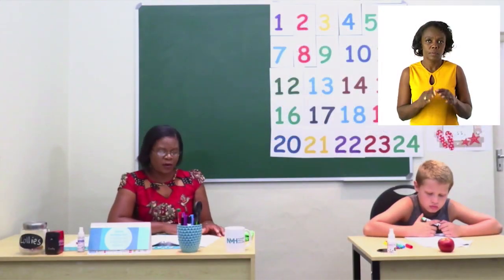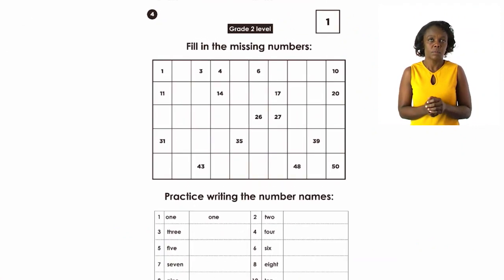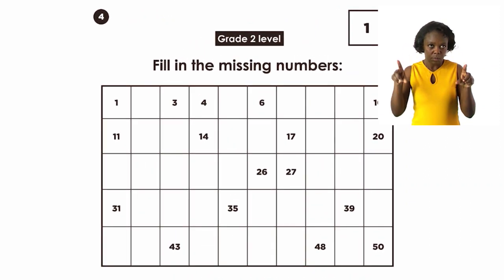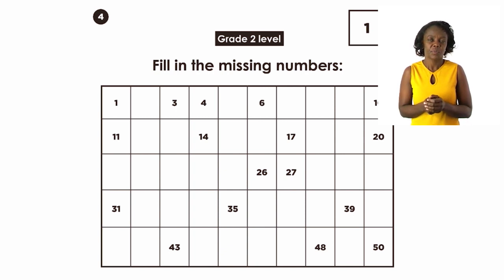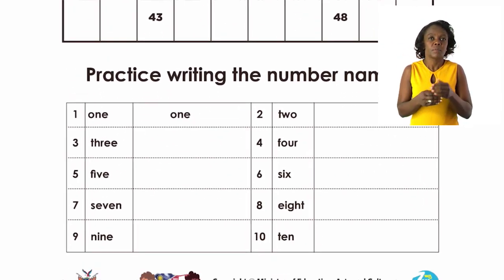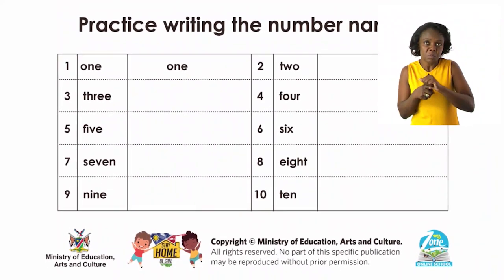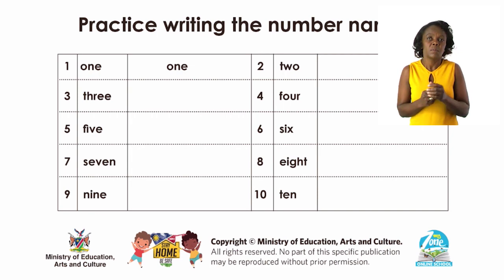Let's turn on to page 4. We are going to start with the grade 2s. There is a number chart up to 50. This is so simple — I know my grade 2s can do this since we have already learned how to count. So just fill in the missing numbers there. Then go to the second activity under — just practice writing your number names. Close your eyes and write the number name and see if you know it.